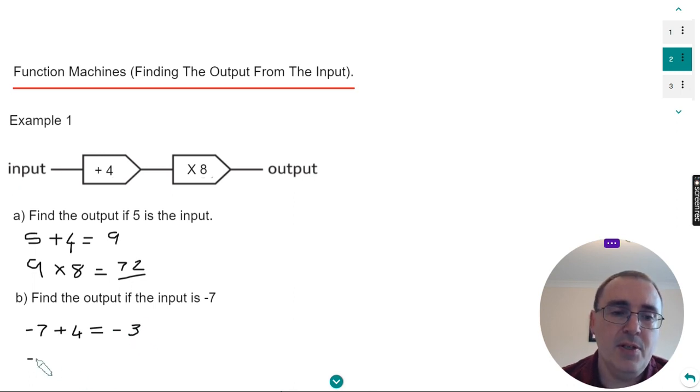Then copy minus three on to the next line. The next operation is to times by eight. So minus three times positive eight would be negative 24. So that would be the output.